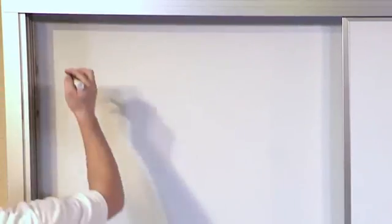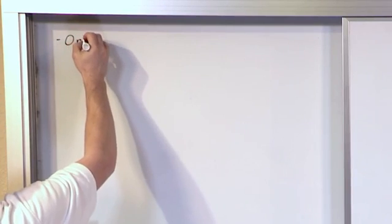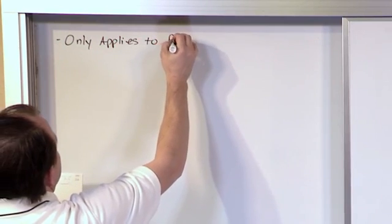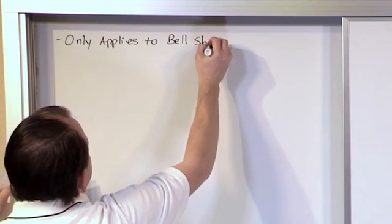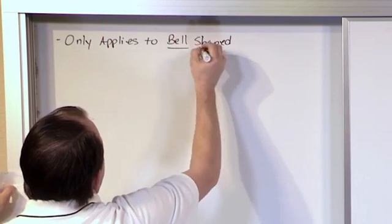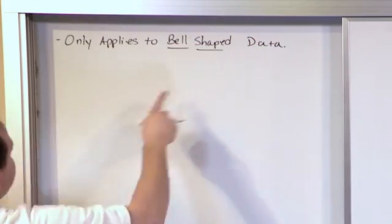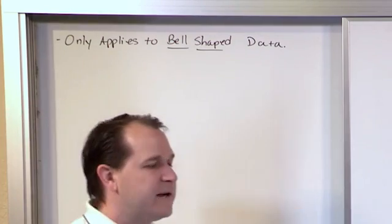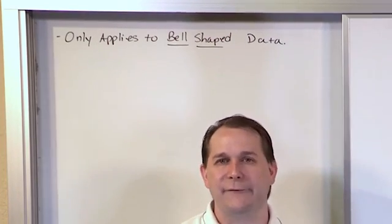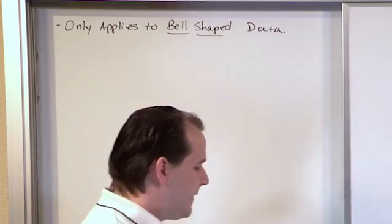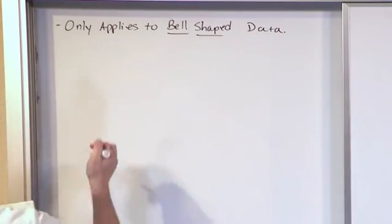The first thing I want to make sure you understand is that everything I'm going to tell you in this section only applies to bell-shaped data, which is extremely common. If you go collect data on average, almost always it's going to be bell-shaped. Let me give you an example of what bell-shaped data is.